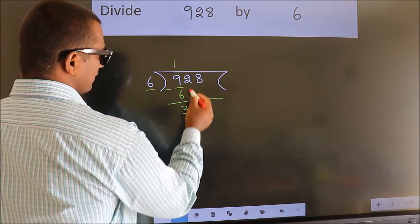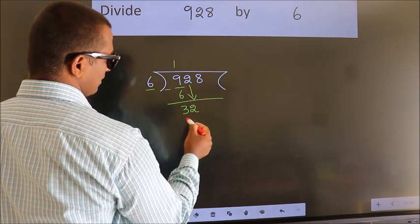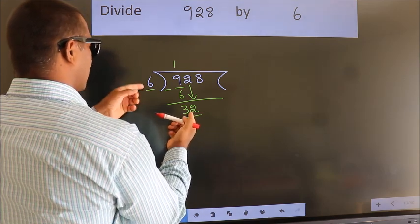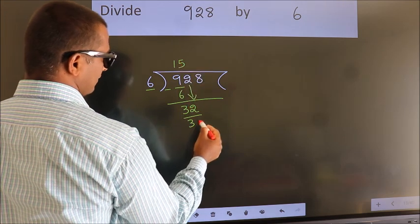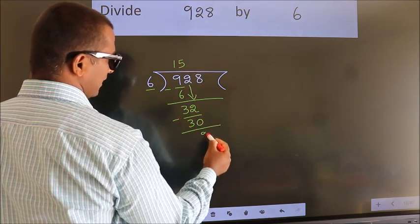After this, bring down the beside number. So, 2 down. So, 32. A number close to 32 in the 6 times table is 6 fives, 30. Now we subtract. We get 2.